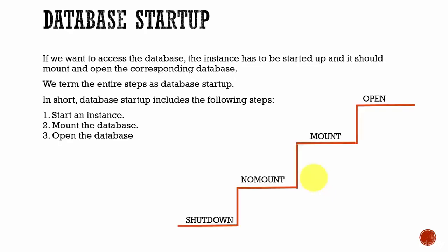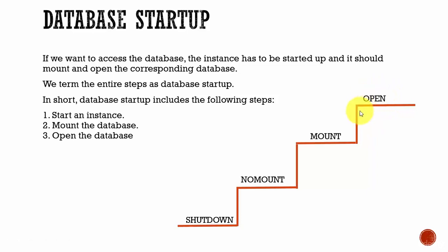Now let's see how a database starts up. If you don't start up a database, it will be in a shutdown mode, meaning you cannot connect to the database and cannot do anything. Whenever you start up a database, it will go to the no-mount stage. From the no-mount stage, it will go to the mount stage, and from the mount stage, it will go to the open stage. These are the steps followed whenever you start up a database. The user can perform operations only after the instance is started and attached to the database.